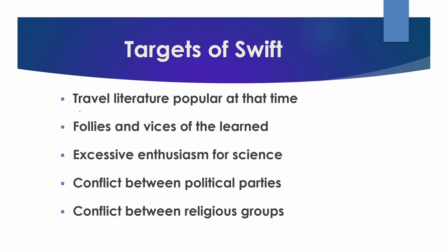The Scriblerus Club proposed to satirize the follies and vices of learned, scientific, and modern men. Each of the members was given a topic, and Swift was to satirize the numerous and popular volumes describing voyages to faraway lands. At that time, everyone was eager to hear about cultures and people in the faraway lands where explorers were claiming colonies for England. Gulliver's Travels developed out of this assignment. In it, Swift satirizes these travel writers as well as gullible, naive, foolish English readers eager for outrageous tall tales about other countries.